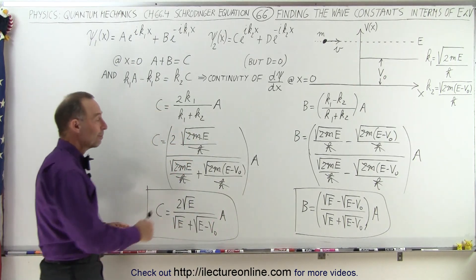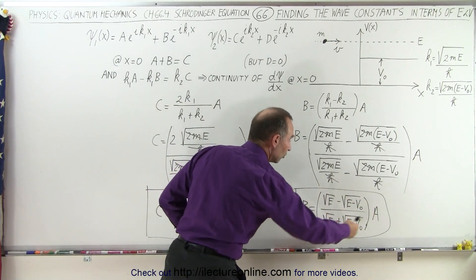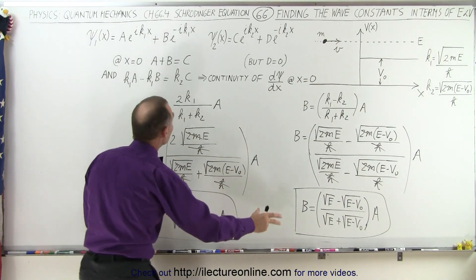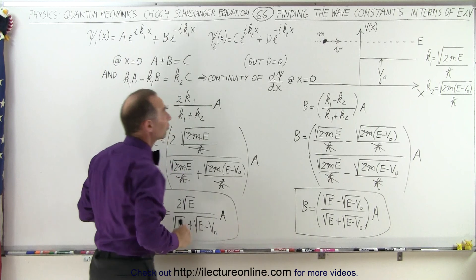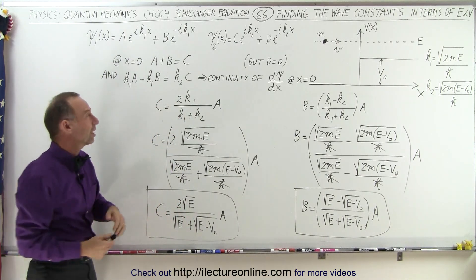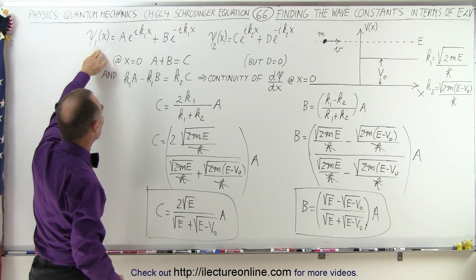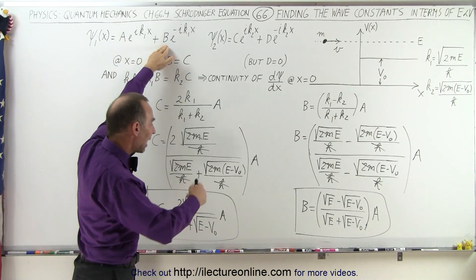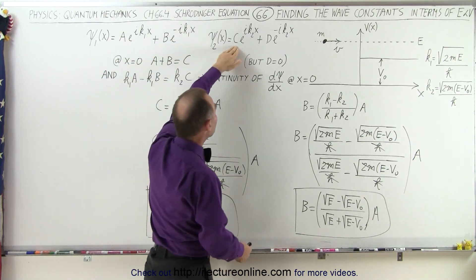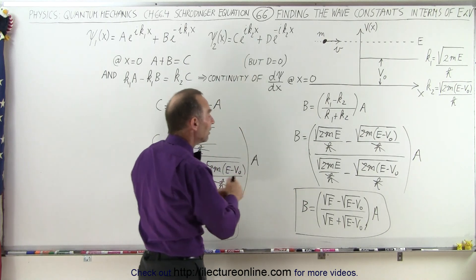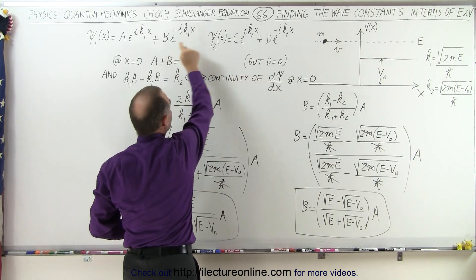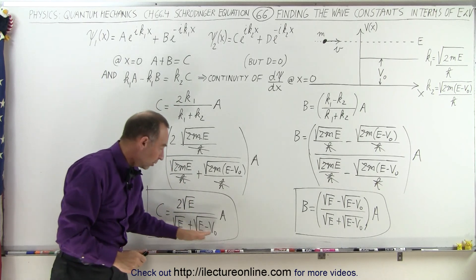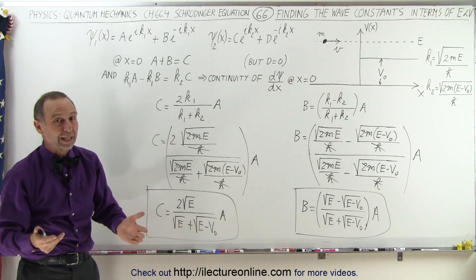So now we have b in terms of a using the energies, and c in terms of a using energies. Those can then be put into our wave equations up here to get a new set of wave functions where we only have one constant a — we have an a here, an a times some constant, and an a times some constant. Again, the value of b and c will depend, of course, upon the energy of the particle and the potential of the barrier. That's how it's done.